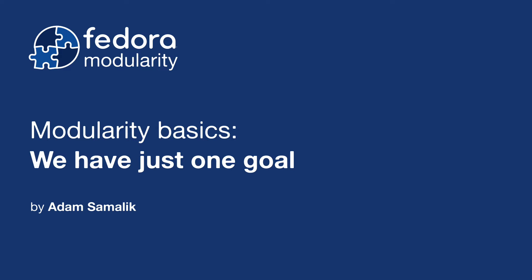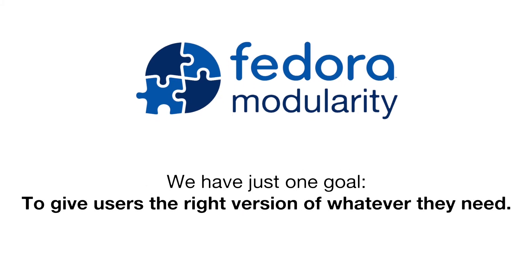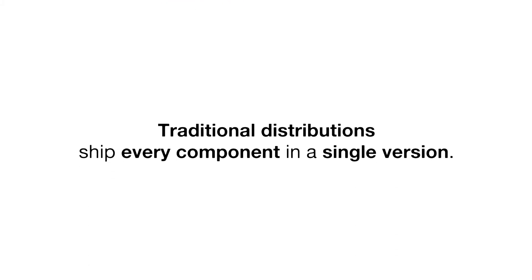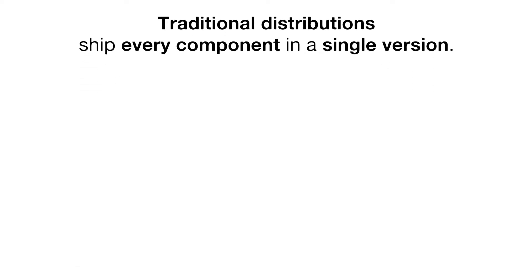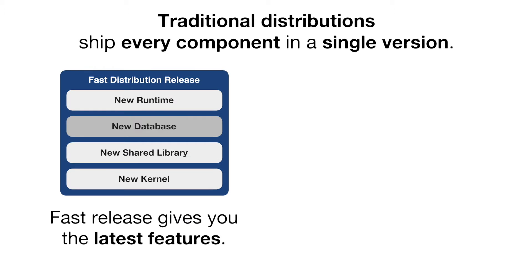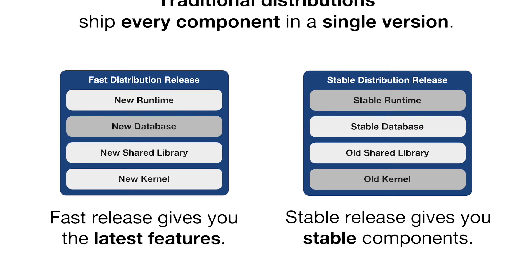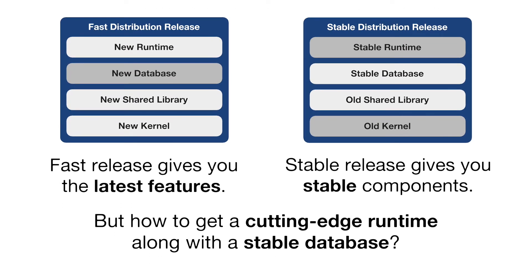In Fedora Modularity, we have just one goal – to give users the right version of whatever they need. Traditional distributions ship every component in a single version. Fast release gives you the latest features, and stable release gives you stable components. But how to get a cutting-edge runtime along with a stable database?